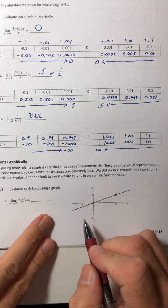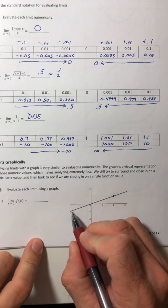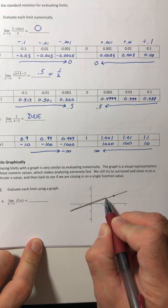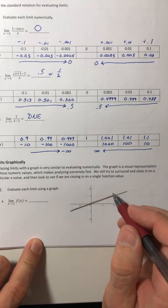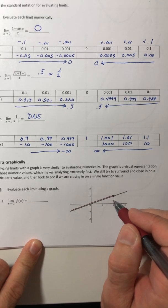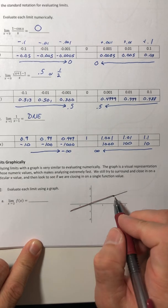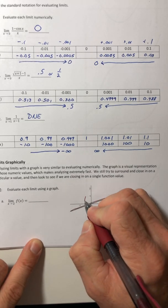So we're going to move in from the left side of two and we're going to trace in. And as you get closer and closer to X equals two, what Y value does it look like you're going to run into? Because we're not actually going to get all the way over there, but what does it look like we're going to run into? Looks like we're going to run into one.